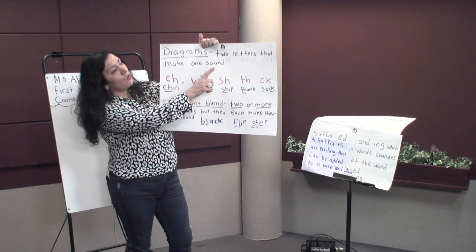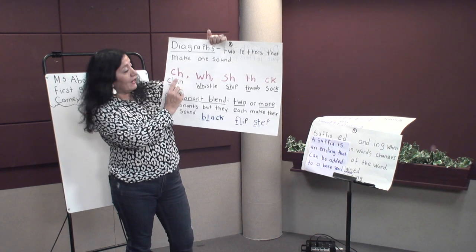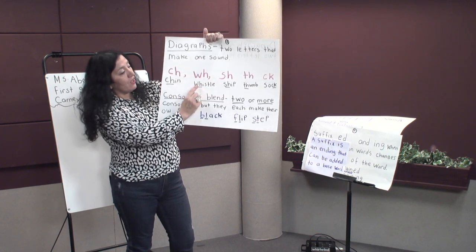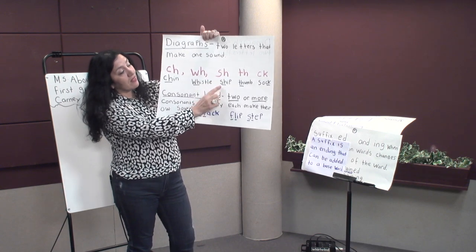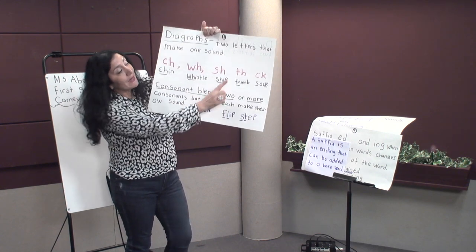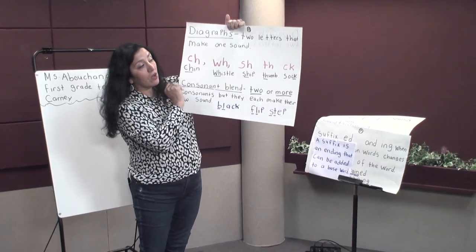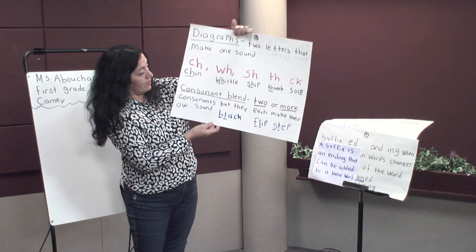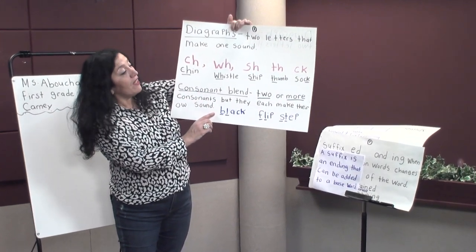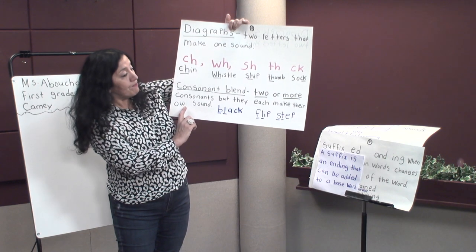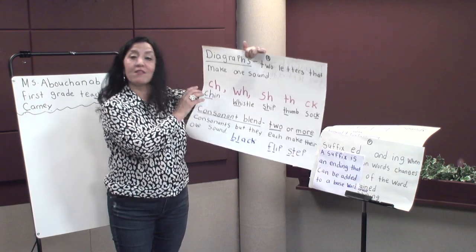Digraphs are two letters that make one sound. An example of a digraph could be ch like chin, wh like whistle, sh like ship, th like thumb, and ck like suck. We're also going to review what consonant blends are. There are two or more consonants but they each make their own sounds, such as block, flip, and step.